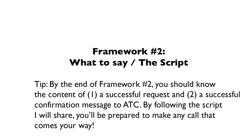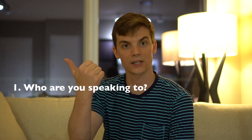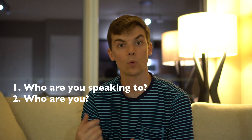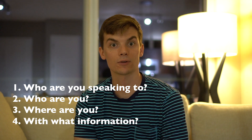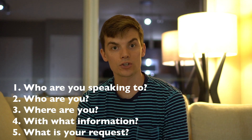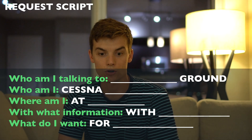By the end of framework number two, you should know the content of: one, a successful request, and two, a successful confirmation message back to ATC. By following the script I will share, you will be prepared to make any call that comes your way. When speaking with ATC, there are generally five things you must communicate: first, who are you speaking to; who are you; where are you; with what information; and finally, what is your request?